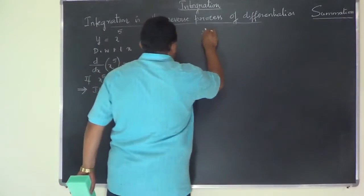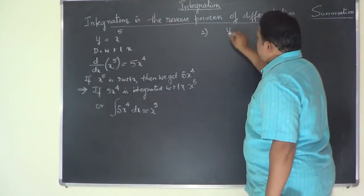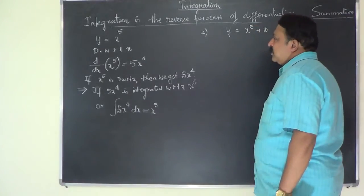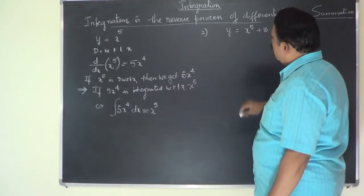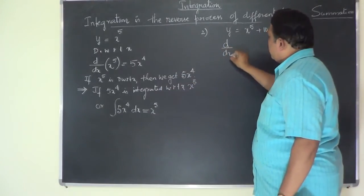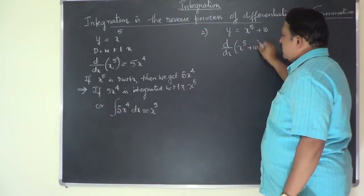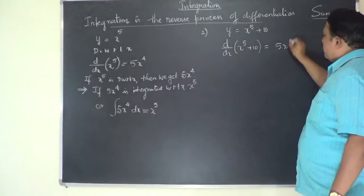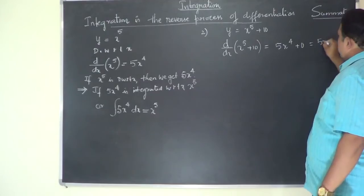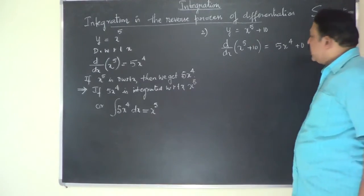For the second example, let y equal x to the power of 5 plus 10, and repeat the same process. The differential coefficient of x⁵ plus 10 is again 5x⁴ plus 0, that is 5x⁴, because the differential coefficient of the constant 10 is 0.